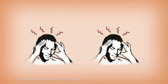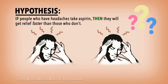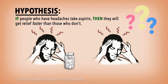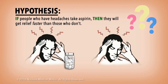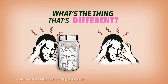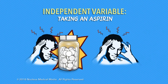Here's another example — see if you can figure it out. This time, the hypothesis is that if people who have headaches take aspirin, then they will get relief faster than those who don't take aspirin for headaches. So, what's the thing that's different in this case? The independent variable is whether or not somebody is taking an aspirin.